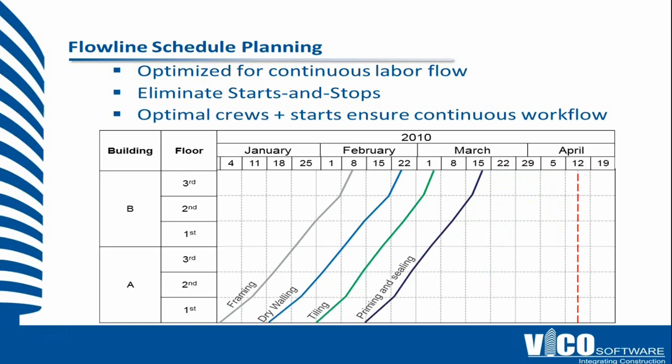We can balance resources, and because the resource equation drives the duration based on the amount of work in each location, we can have a more accurate and harmonious schedule rather than making arbitrary changes. In the software demonstration, once quantities and resources are loaded onto tasks, we have to tell the system how many resources to apply in order to achieve the duration we're trying to optimize for. This is how location gets added to the schedule from a planning perspective.